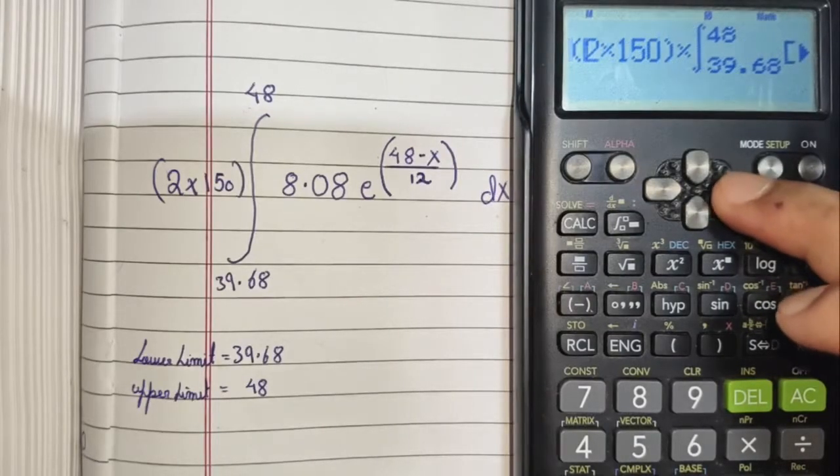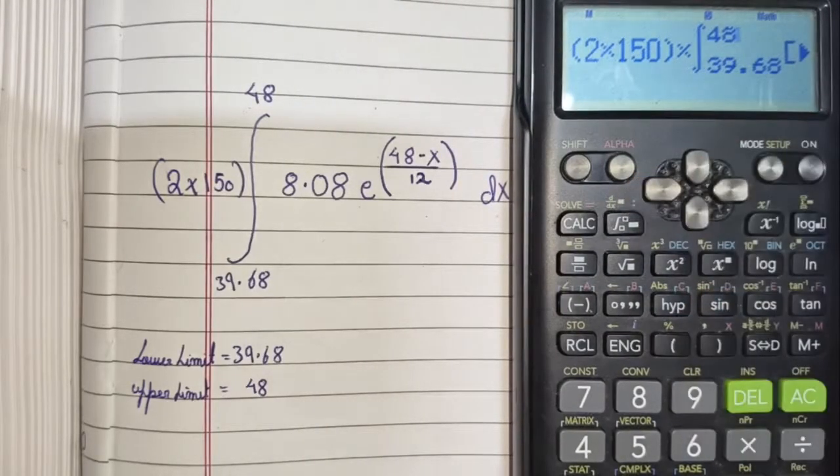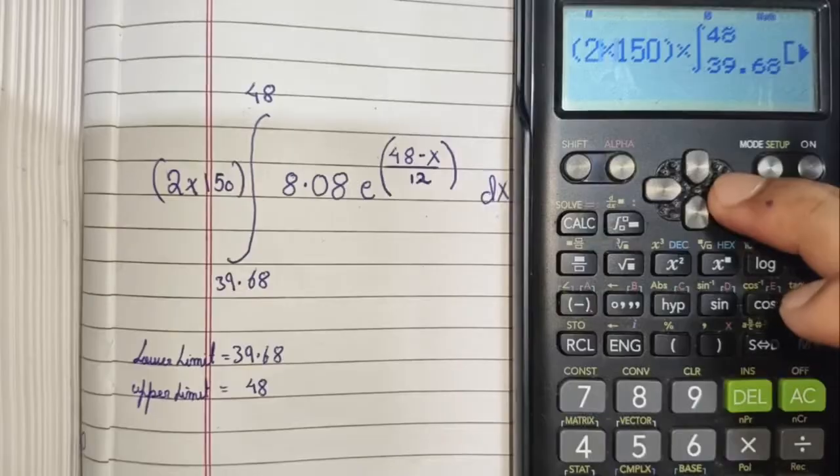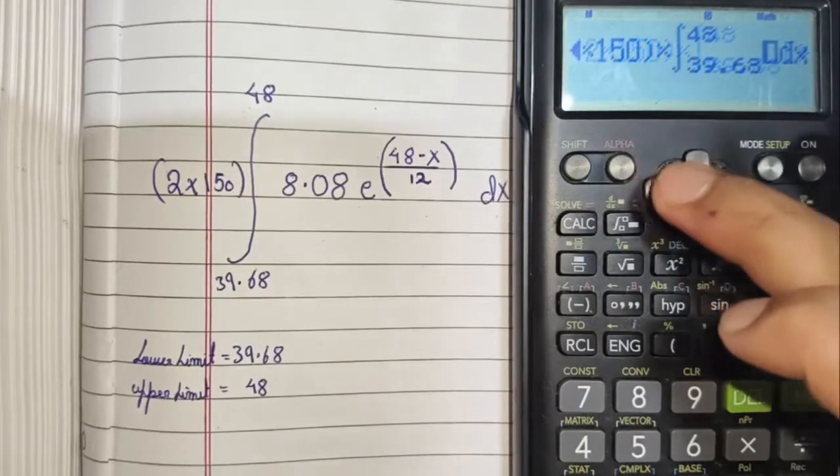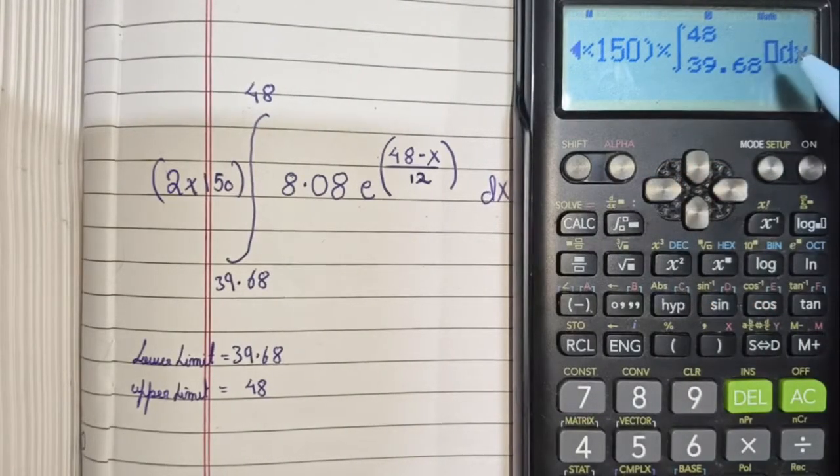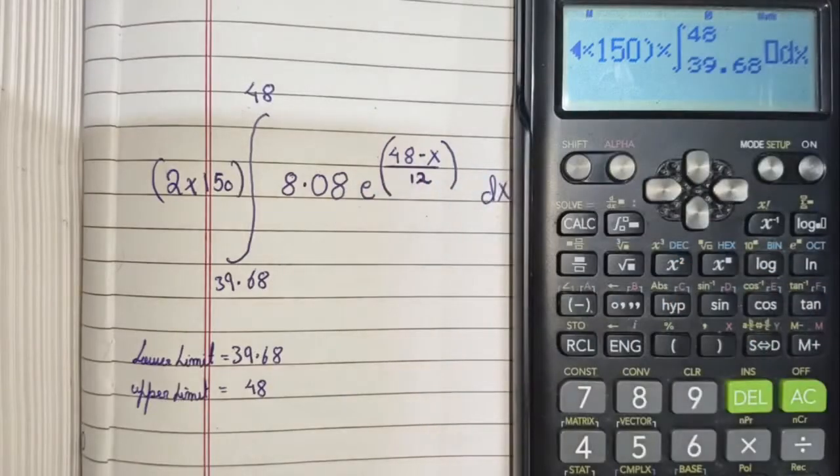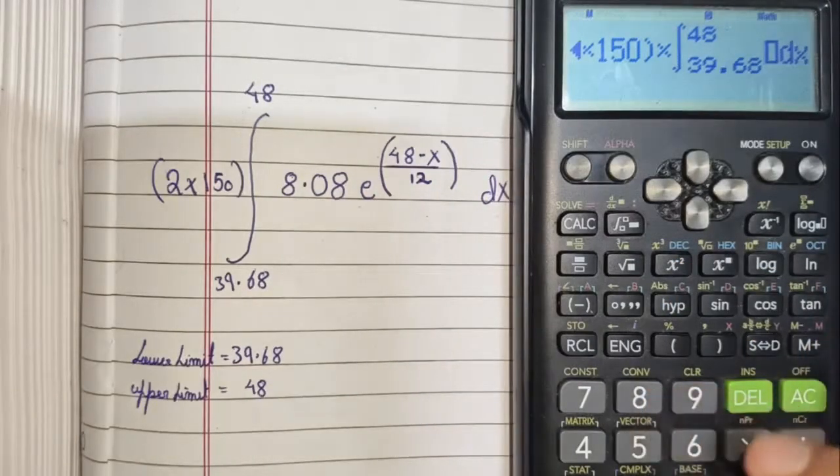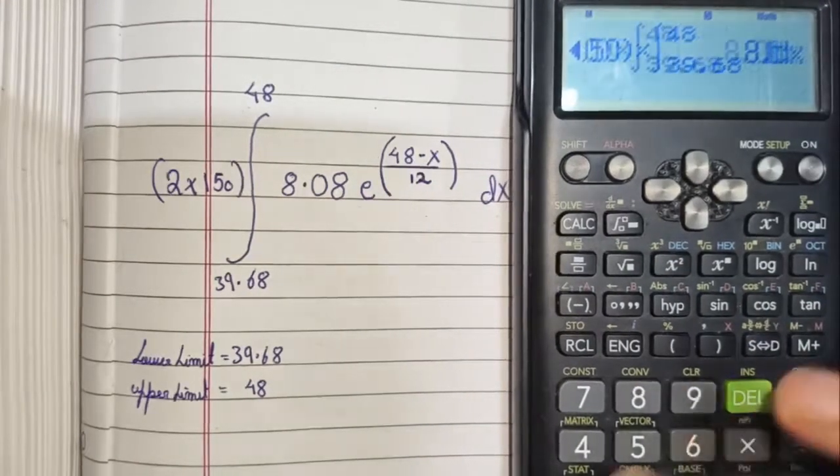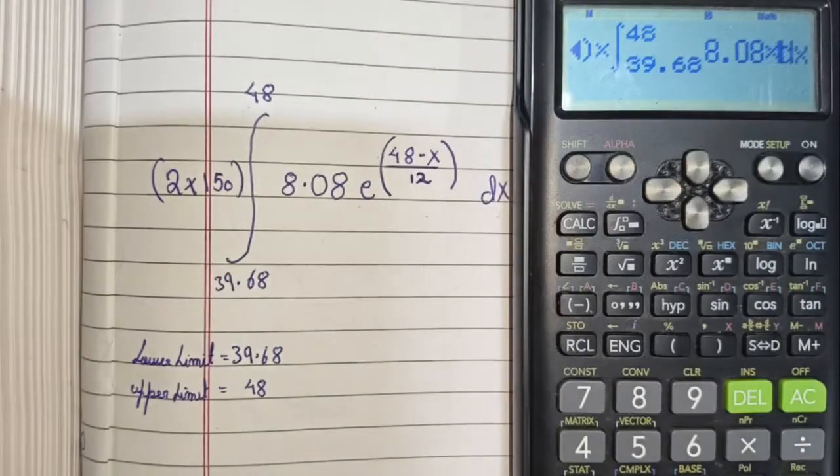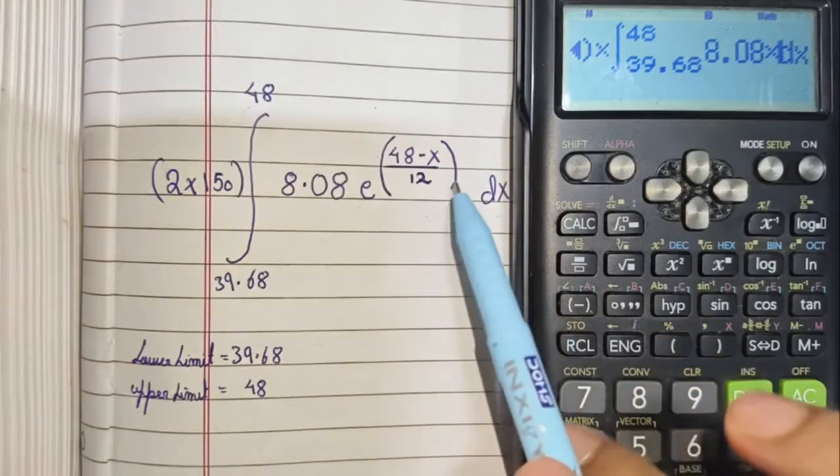Now, let's feed in the function. Navigate with your arrow keys. Here, first we have 8.08, which is a constant. So, type it in as it is, 8.08 multiplied with this function.